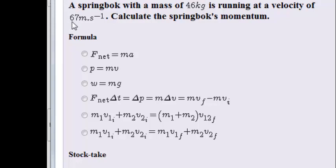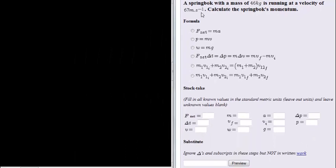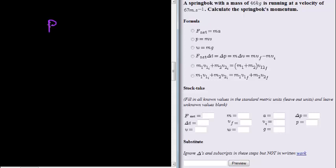It is running at 67 meters per second and its mass actually is 46 kilograms. So we know momentum is a very simple formula of mass times velocity. In other words, it's the product of an object's mass and velocity.